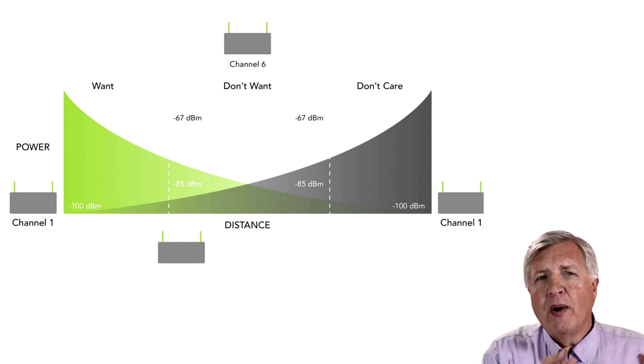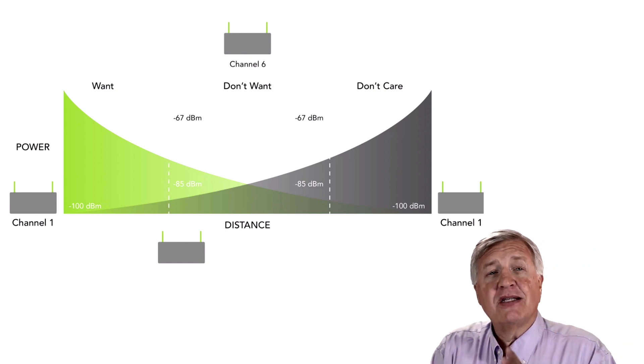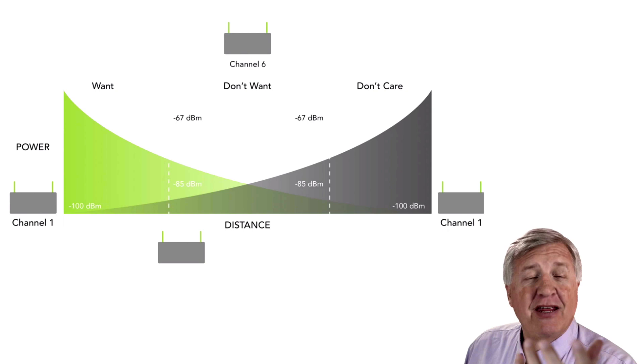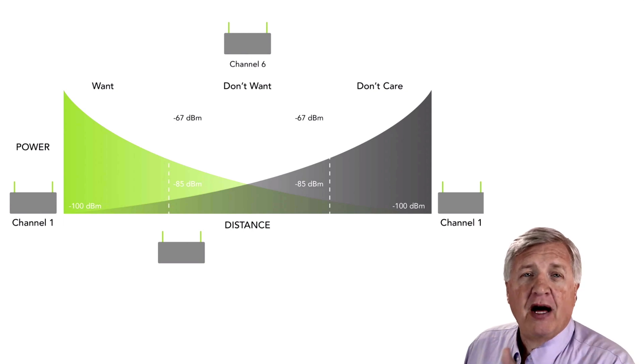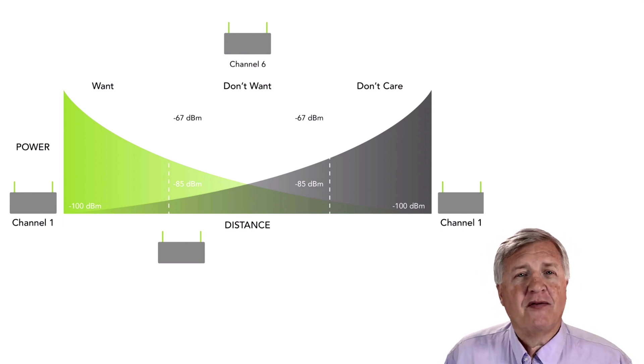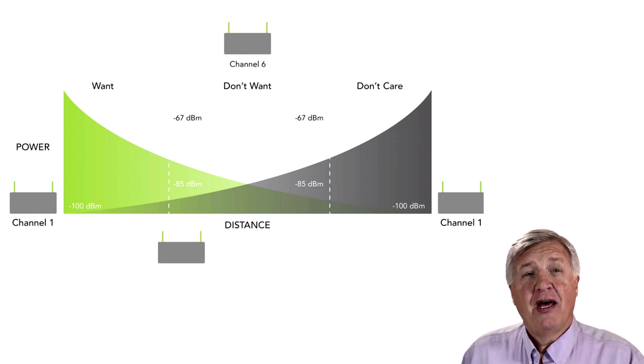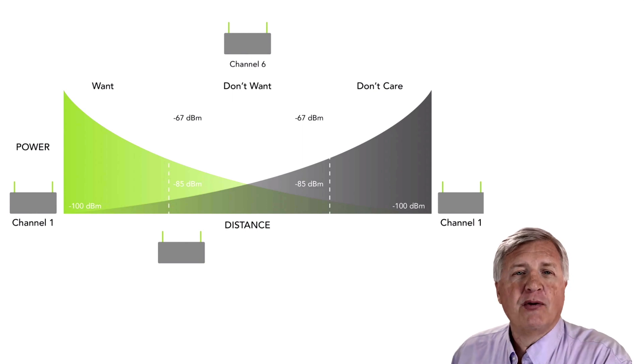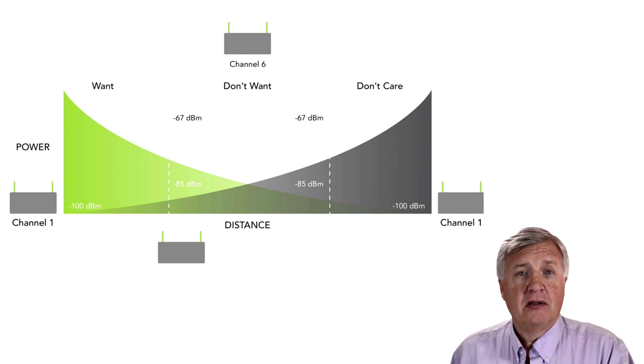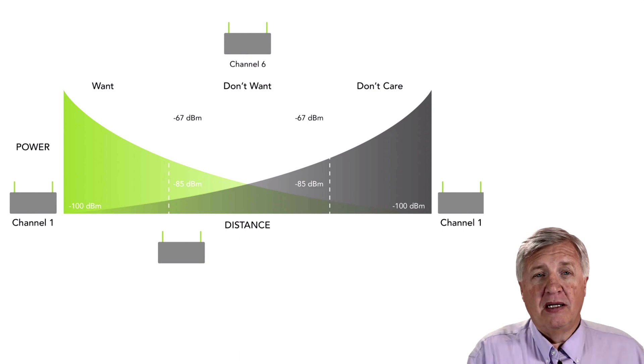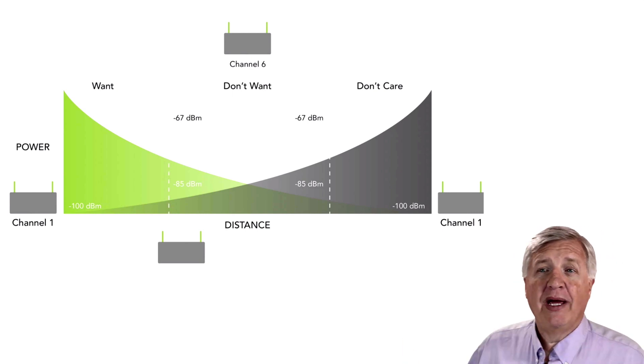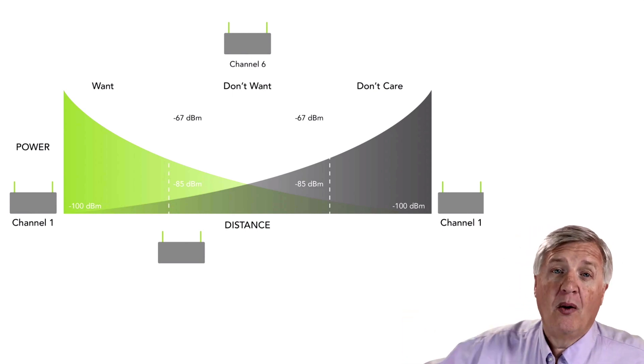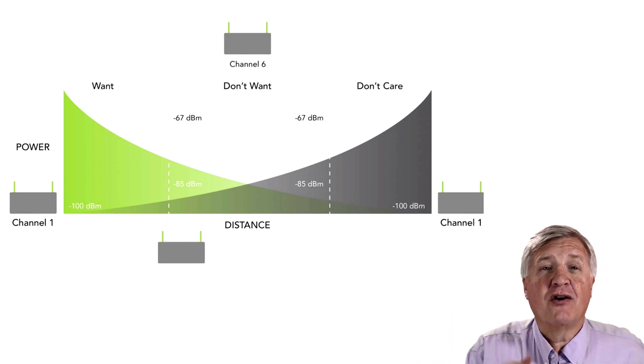But the signal doesn't stop. It continues on and on and on. So what we want is whatever's above our threshold. In this case, -67. When it goes down, down, down, down, it gets to a point in this picture we're showing it as -85. After -85, we can have our client devices program to ignore it. Depending on what client device, how it's sensitive, whether it's an AP or a client, you can actually control this in some APs. The sensitivity of at what point am I going to ignore it. But below that level, we don't care anymore. So we have want above 67. We have don't care below 85. What's stuck in the middle? That's our don't want.